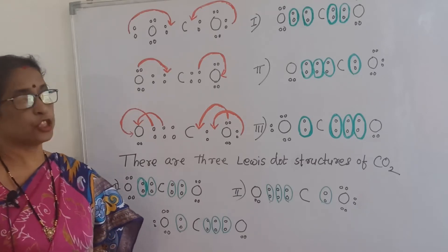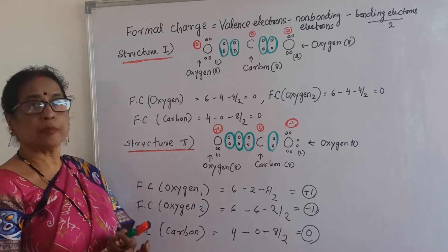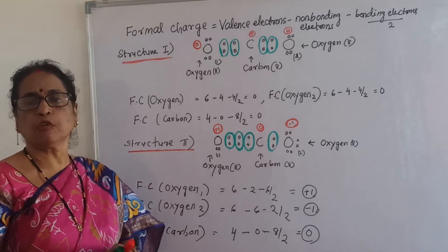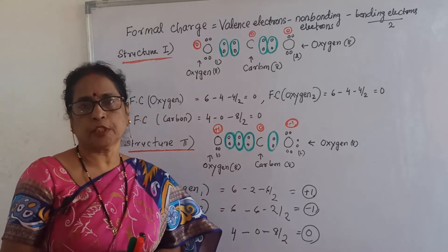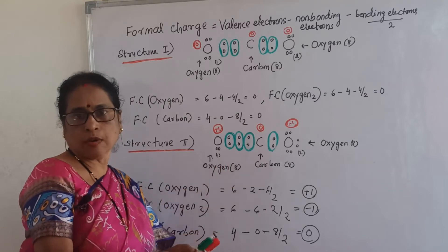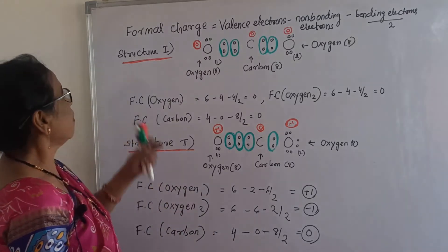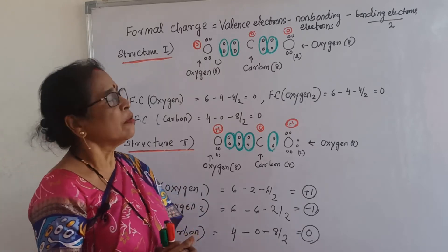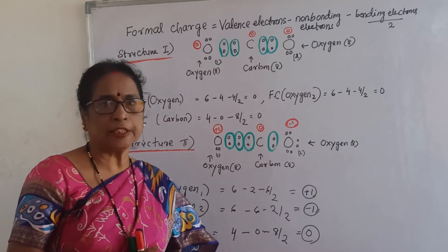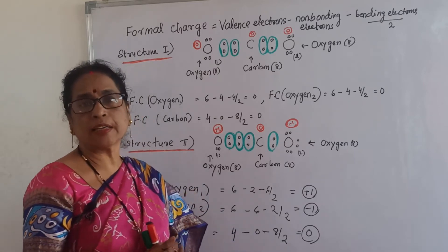There are three Lewis structures of carbon dioxide. For three Lewis structures we will calculate the formal charge of carbon and two oxygens. Out of formal charge we can say which is the best structure, and out of Lewis structures we can say what would be the resonance structures and resonance hybrid. Formal charge formula: valence electron minus non-bonding electrons minus bonding electrons divided by two.